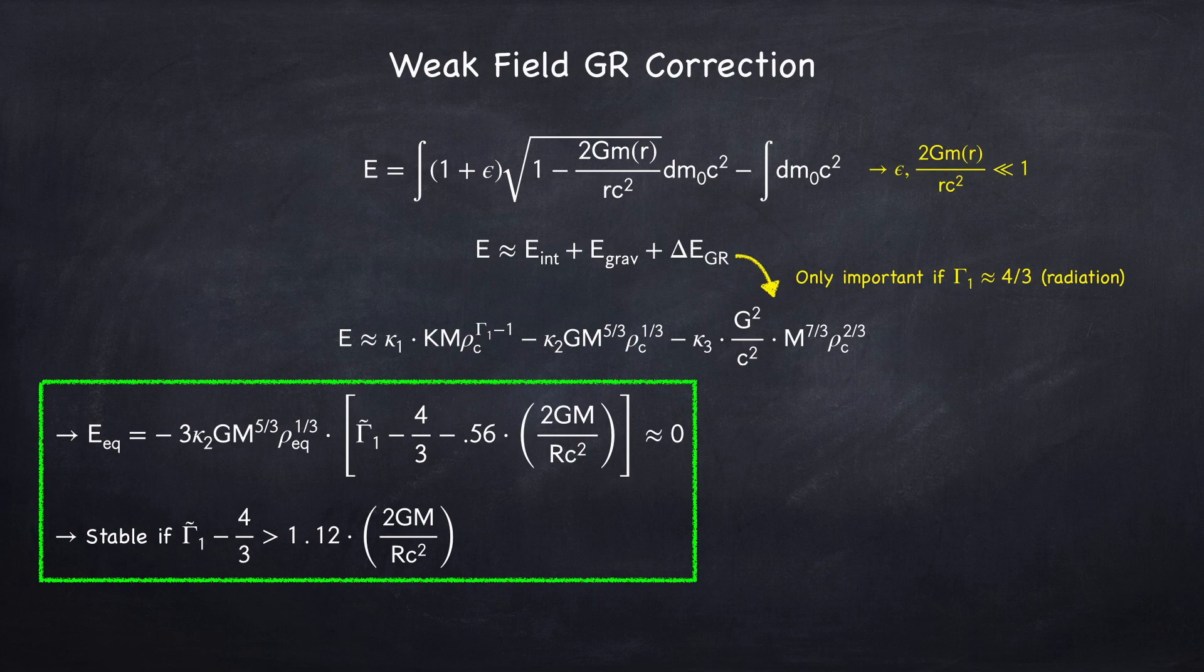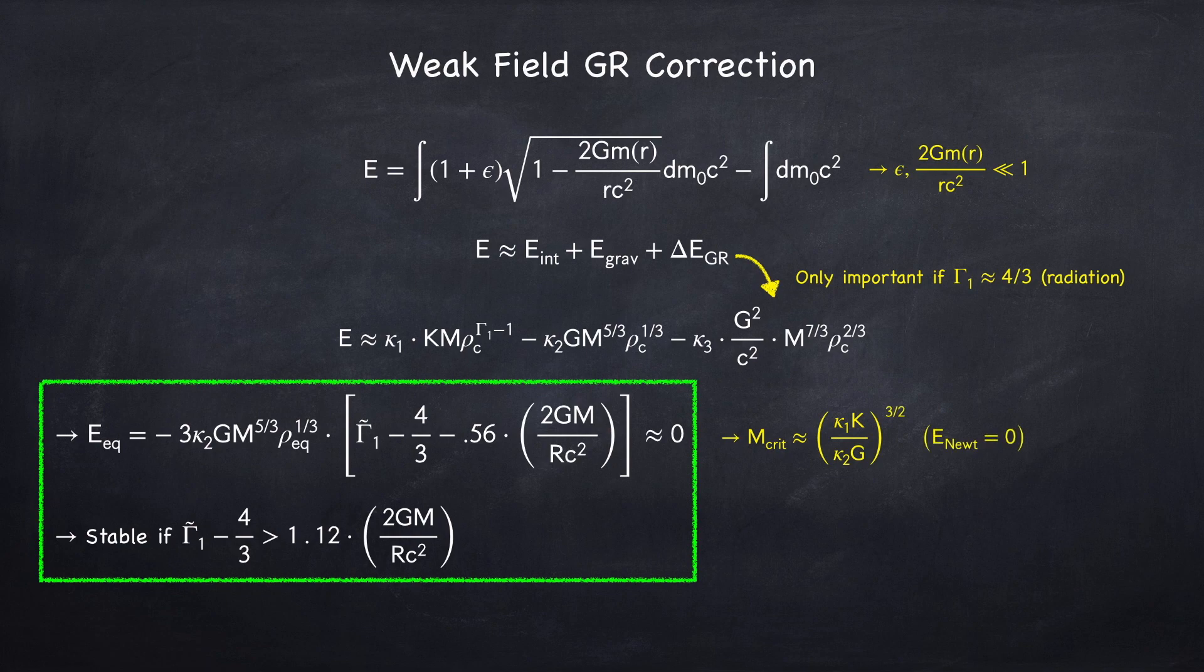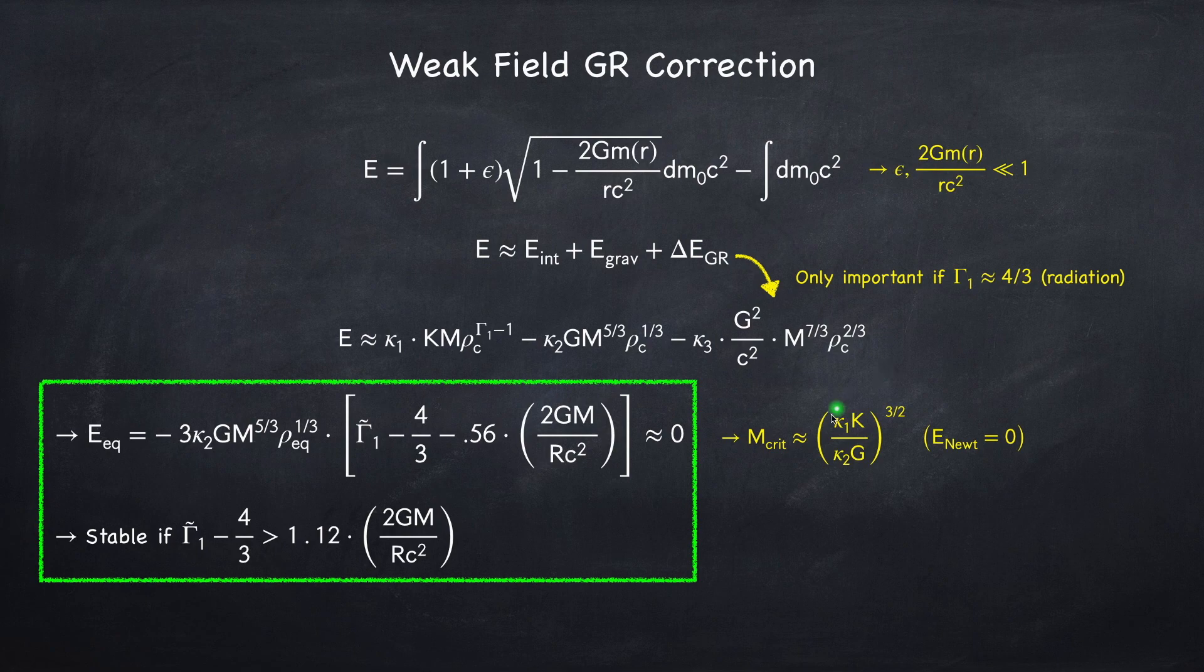The mass at which a star will go unstable, which we call the critical mass, can be found by setting the Newtonian energy to 0. And this will depend on what k is, meaning it will depend on the exact equation of state of the star.